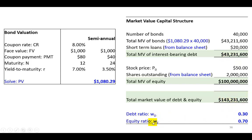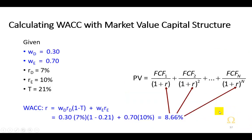Therefore, the market value equity ratio is 70% ($100 ÷ $143.2). Armed with these two vital pieces of data, we recalculate the weighted average cost of capital and find it to be 8.66%, which we can then utilize in the valuation of the underlying project or, for that matter, the firm.